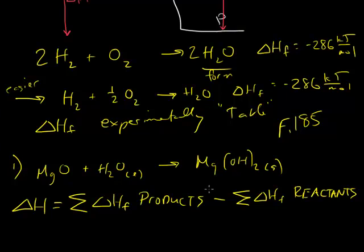So the first product we have is magnesium hydroxide. And on the back of F185, we'll look this up, and this value has negative 925.0. That's kilojoules per mole. And then we look at our reactants. MgO has a negative 602 kilojoules per mole. And our water has a value of liquid water, negative 286 kilojoules per mole.